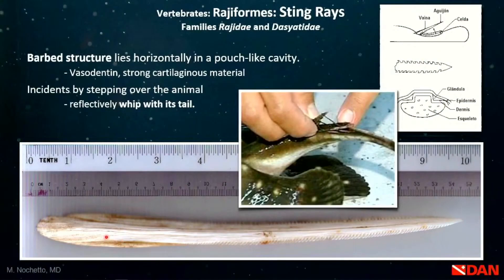At the base of their tail they have a barb. The barb is not bone — it is very dense cartilage. The barb sits in a pouch-like cavity, and when the animal feels threatened, it whips its tail and causes injury. In a cross-sectional view of the barb, we can see soft tissues covering it, and between the tissues and the barb there are glands that produce the injurious substance.